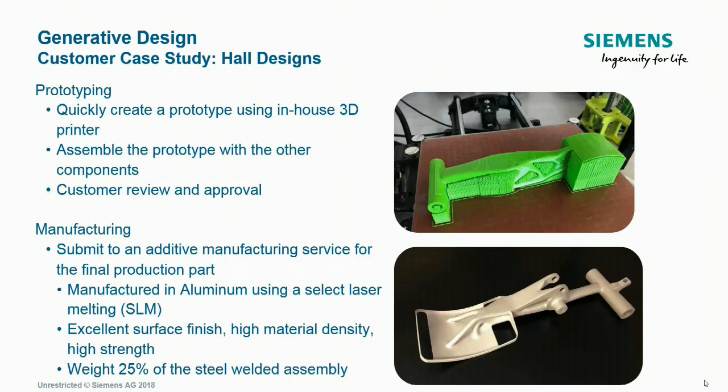Thank you, John. To summarize the results of the Hall Designs Generative Design case study: a prototype was created in plastic using their in-house 3D printer to prove out fit, function, and gain customer approval. The final production part was then created by submitting the design to an external additive manufacturing specialist, who printed the component in aluminum using a selective metal sintering technique. The final component was 25% the weight of the original, with excellent surface finish and very strong density.